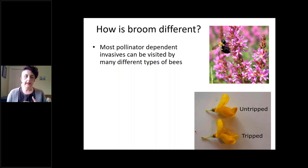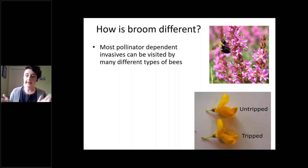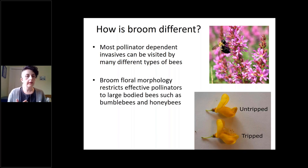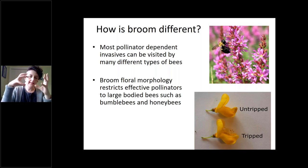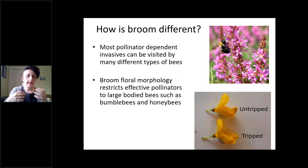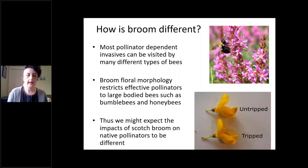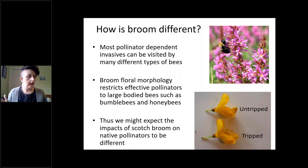Scotch broom is a bit of a weirdo in the land of flowering invasive plants. The typical idea is that an invasive flowering plant should be visitable by many different types of bees. But scotch broom's floral morphology actually restricts effective pollinators to large-bodied bees such as bumblebees and honeybees. As you can see in my diagram, I have a tripped and an untripped flower — a large-bodied bee has to land on the flower and depress the keel so that the anthers and stigma pop out. So we might expect scotch broom's interactions with native pollinators to differ from a plant like purple loosestrife that can be visited by just about anything.